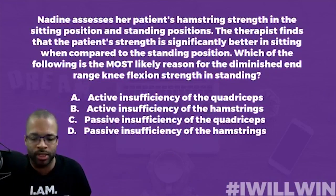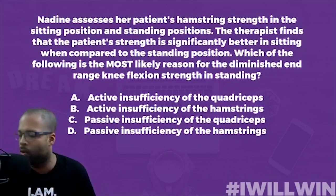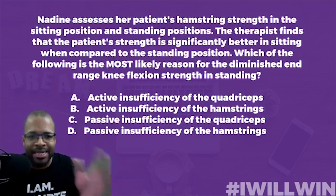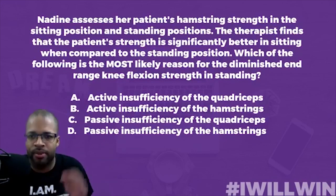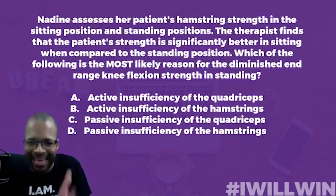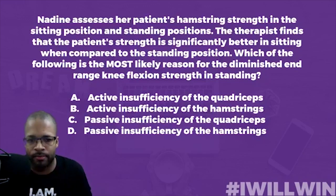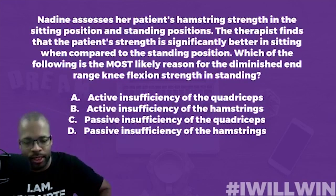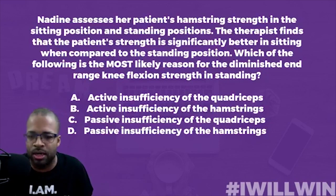All right, with this specific question we're going to start knocking it down and then dissect the answer choices. Nadine assesses her patient's hamstring strength in the sitting position and the standing position. The therapist finds the patient's strength is significantly better in sitting when compared to standing. Which of the following is the most likely reason for the diminished end-range knee flexion strength in standing? A) active insufficiency of the quadriceps, B) active insufficiency of the hamstrings, C) passive insufficiency of the quads, D) passive insufficiency of the hamstrings.